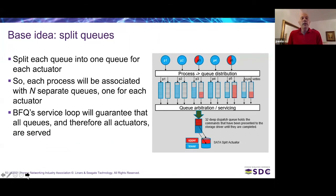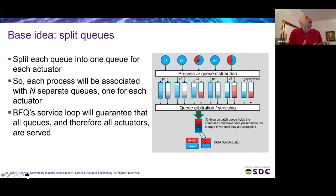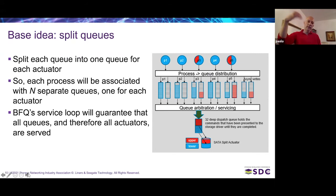The basic idea is to split each queue into one queue for each actuator, so each process will have N separate queues, one per actuator. If we do this, the service loop will guarantee that all queues — and therefore all actuators — are served, because the service loop gives each queue a fraction of bandwidth proportional to its weight. With a queue for each actuator, we're guaranteed that all actuators will be served because all queues will be served.